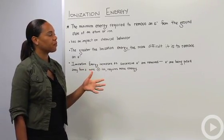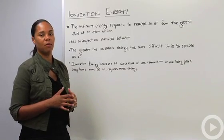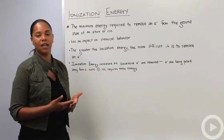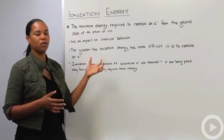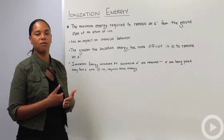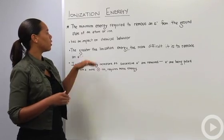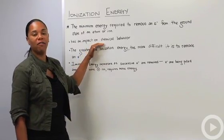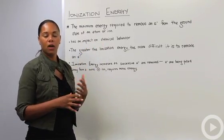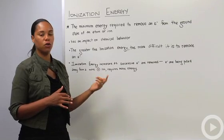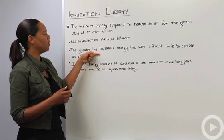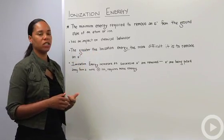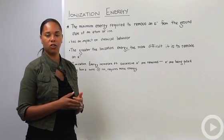You'll recall from learning about the structure of an atom how the ground state and an excited state work. This is the minimum energy required to remove an electron from the ground state. This has an impact on chemical behavior because it relates to how electrons move between metals and nonmetals. Basically, the greater the ionization energy, the more difficult it is to remove an electron.